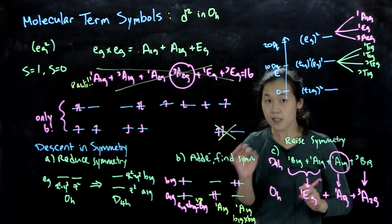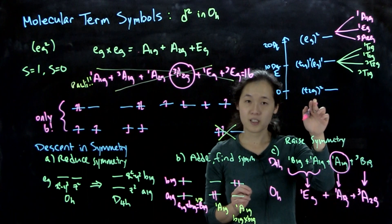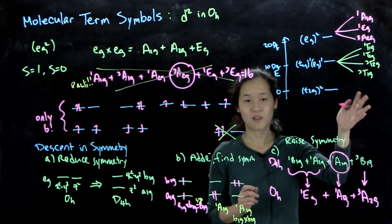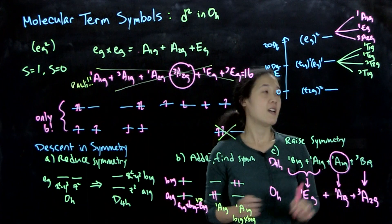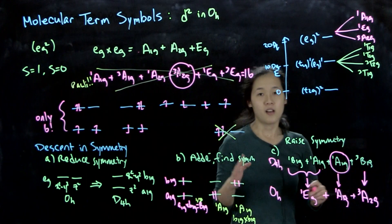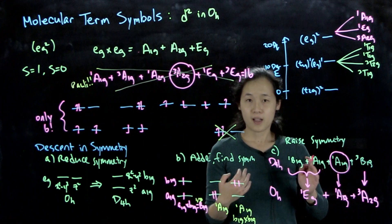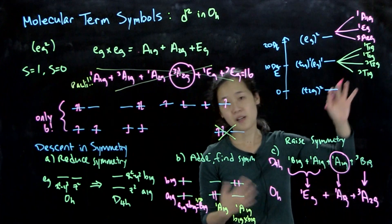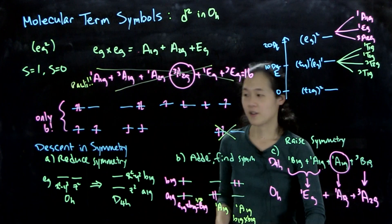Okay, so in class, we will actually do the t2g2 configuration. So I'll let you fill in this part of your table after class. And I'll also give you another shortcut to kind of address this problem as we're trying to find our different terms and our excited states. Okay, great. Thank you.